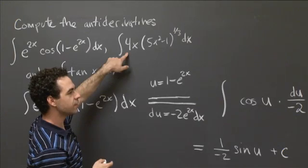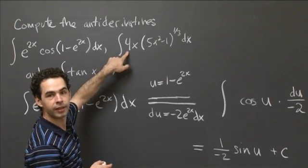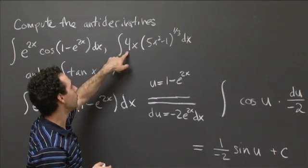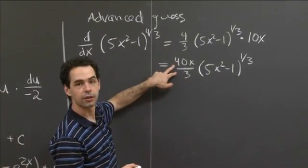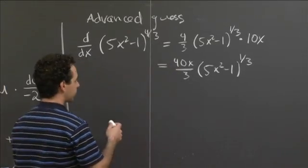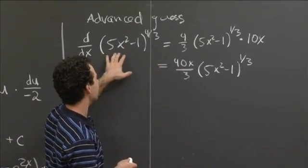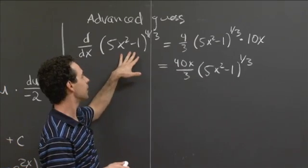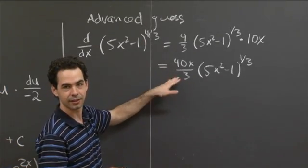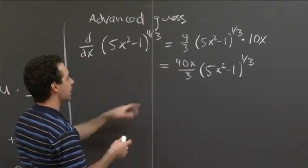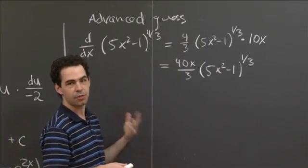So the difference is just this constant out front is a little bit different. So here I have 4, whereas when I take this derivative, I had 40 thirds. So I need to correct for that. And the correction is just to say, oh, instead of starting with this 5x squared minus 1 to the 4 thirds, I need to start with some multiple of it to make the constant work out right in the end. So in this case, I was off by a multiple of 10 thirds.